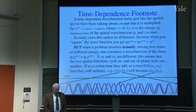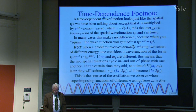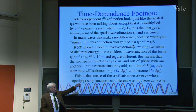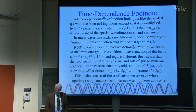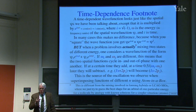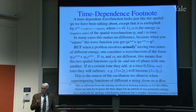This is the source of the oscillation we observe when superimposing functions of different n using atom in a box — different energy — so the electron density going up and down. Note this is different from what we were doing when we made hybrid orbitals.